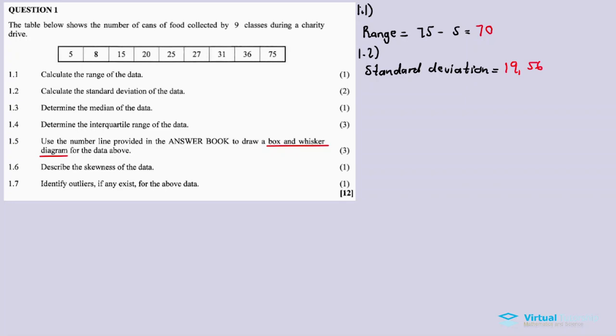1.3, find the median of the data. For the median, count the data: five, eight, fifteen, twenty, twenty, twenty-five, twenty-seven, thirty-one, thirty-six, seventy-five. Count one, two, three, four from the left, and one, two, three, four from the right. So the number in the middle is basically the median. Four on the left, four on the right means twenty-five is the median.